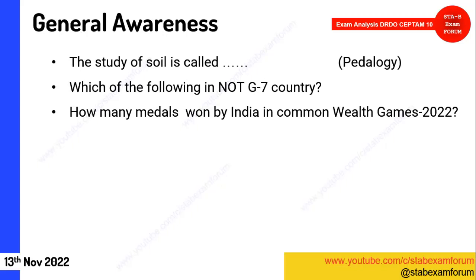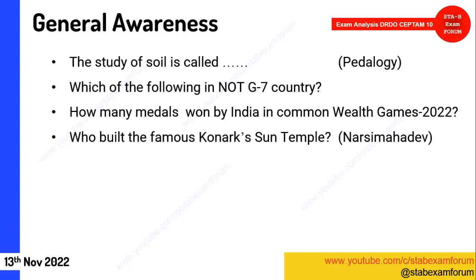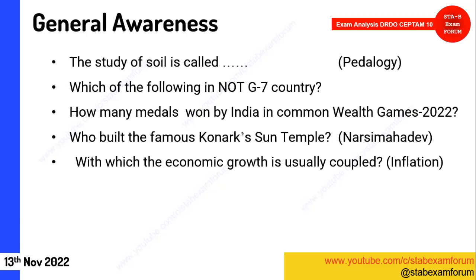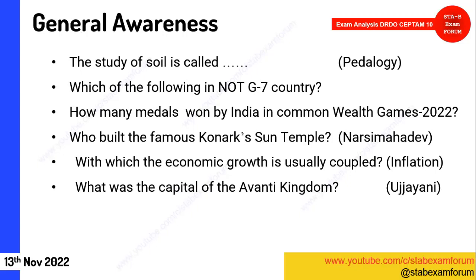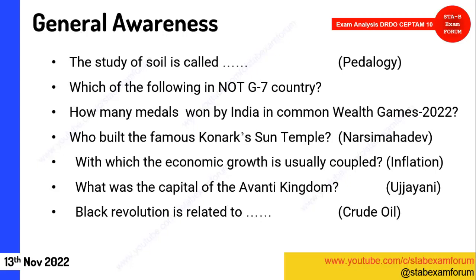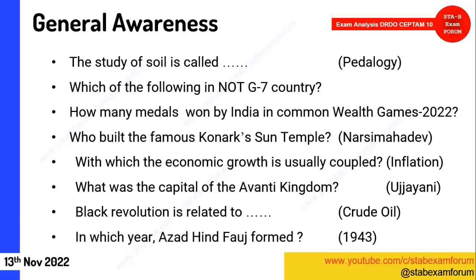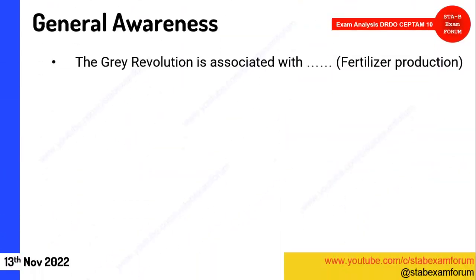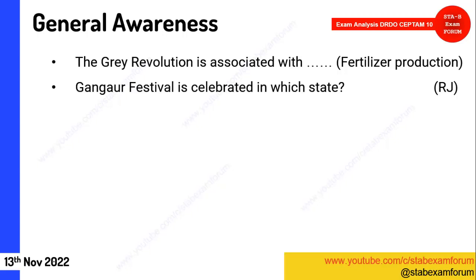Regarding the Commonwealth Games: 'How many medals did India win?' and in the last shift, 'Which country got the highest number of gold medals?' — keep an eye on these current affairs. A static knowledge question: 'Who built the famous Konark Sun Temple?' One question: 'Economic growth is usually coupled with which of the following terminologies?' — inflation was the right answer. A question on the Avanti kingdom capital came. Revolutions were asked in various shifts — in the afternoon shift: 'Black revolution is related to what?' — the answer was crude oil. From history: 'Azad Hind Fauj was formed in which year?' — the answer was 1943. The grey revolution is related to fertilizer production.